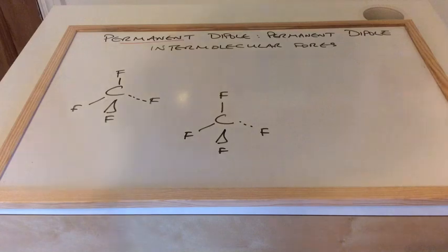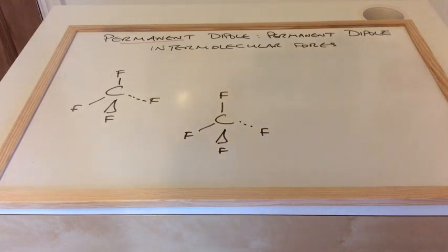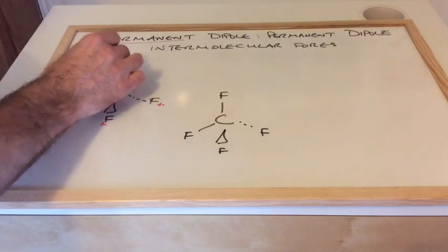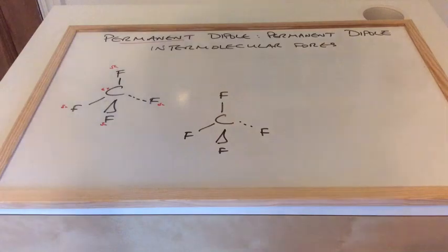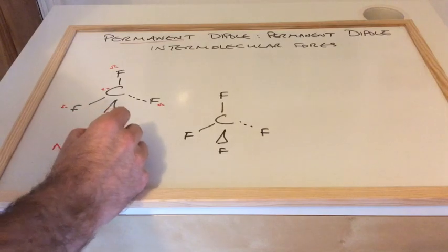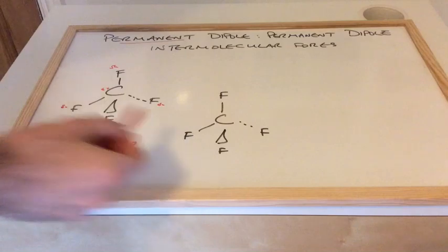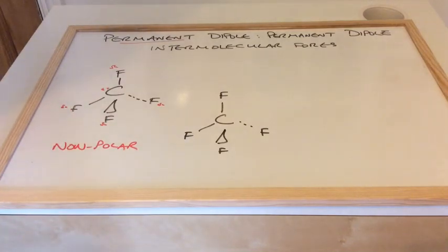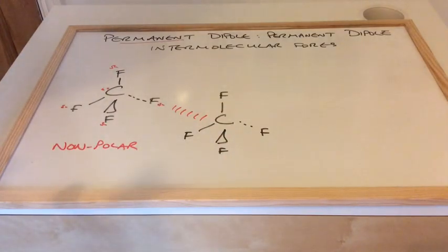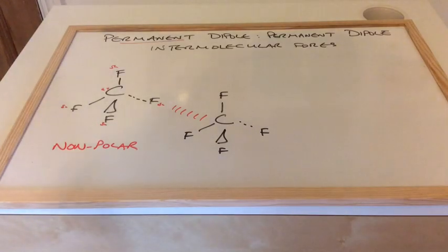Let's finish by comparing two similar molecules. CF₄, carbon tetrafluoride, has fluorine — the most electronegative element — but because this molecule is totally symmetrical, all those dipoles, delta minus on each fluorine and delta plus in the middle, all cancel each other out. So CF₄ molecules are non-polar. Because there's no permanent dipole in this molecule, we have van der Waals forces between these molecules. This gives it a low boiling point, because van der Waals forces are the weakest intermolecular force and not very much energy is needed to separate the molecules.